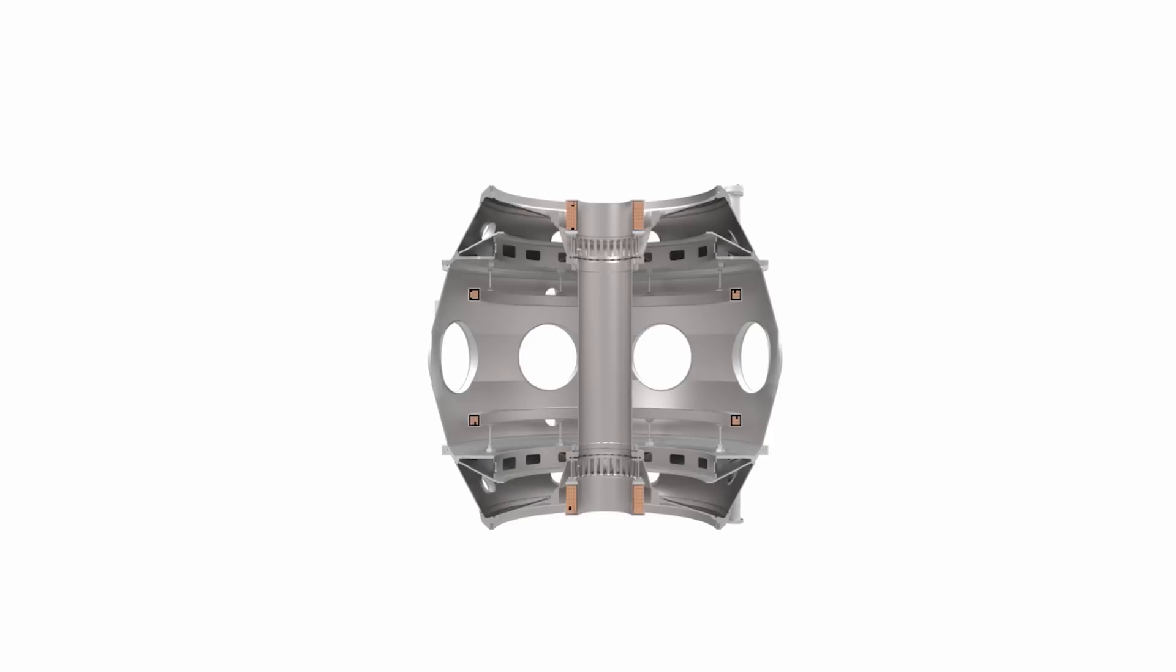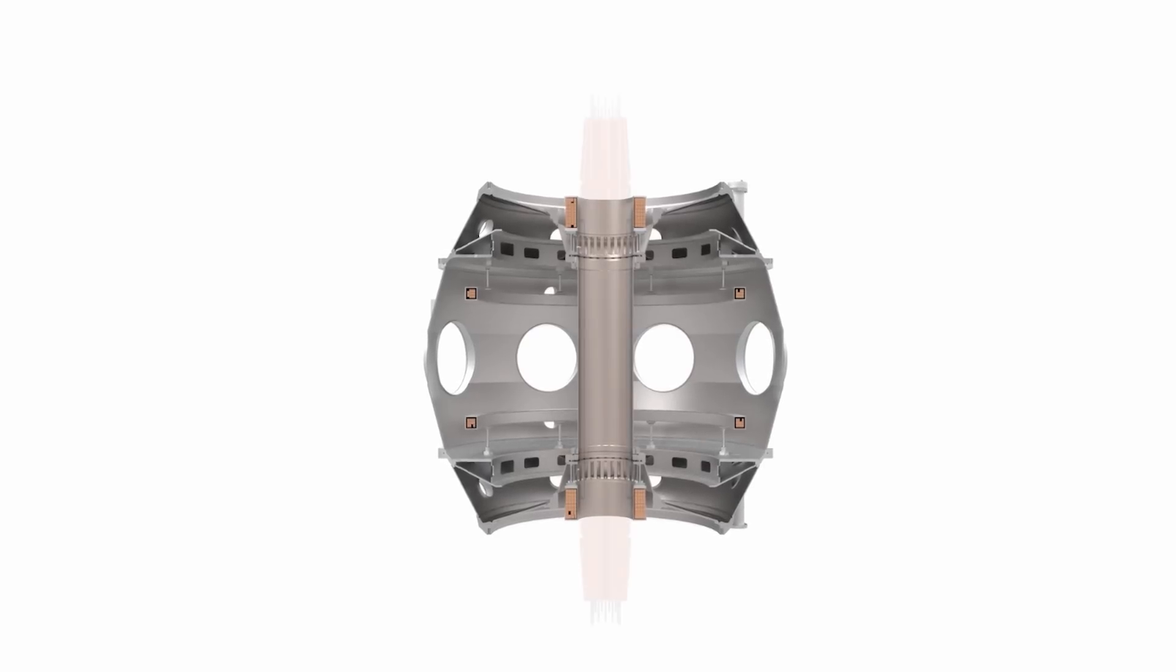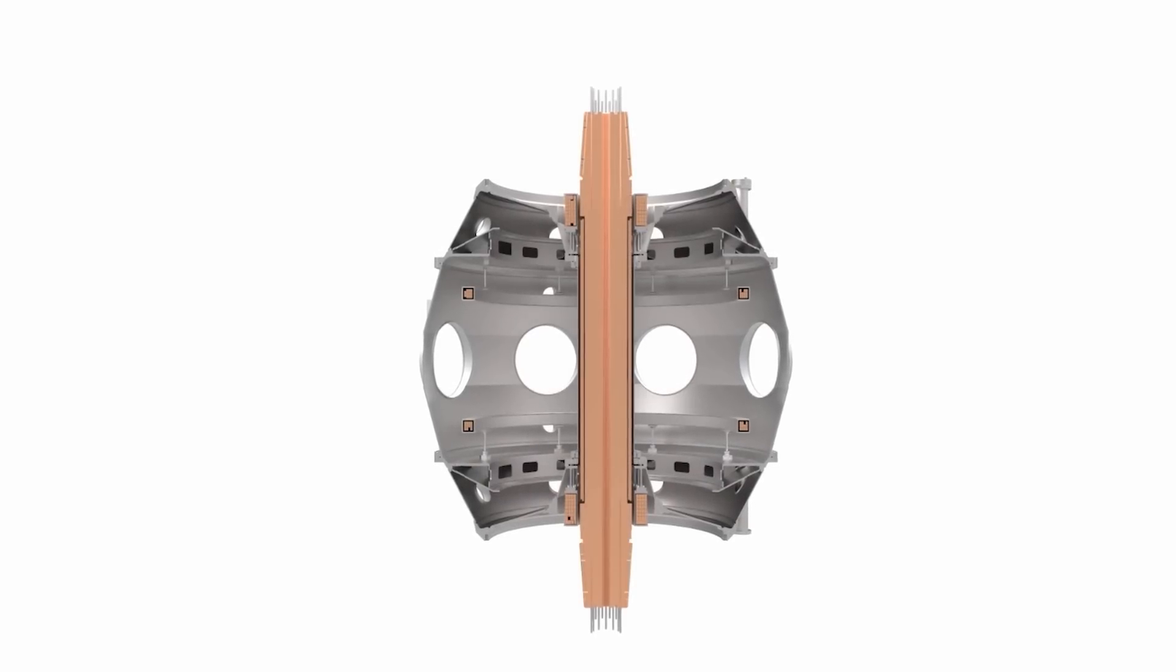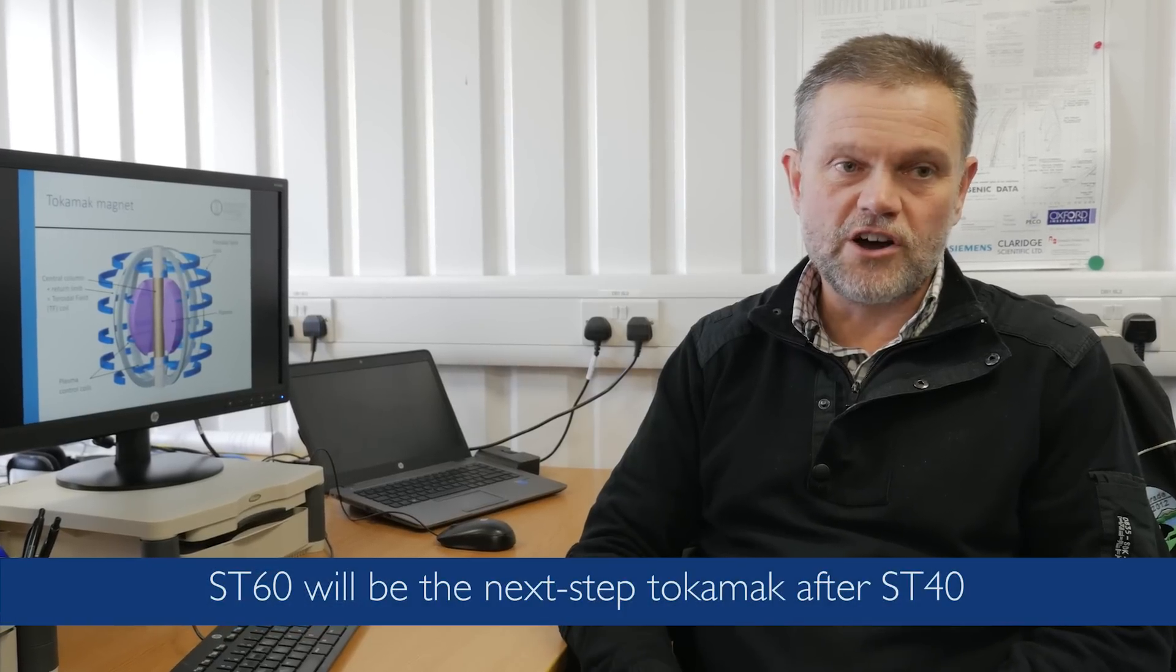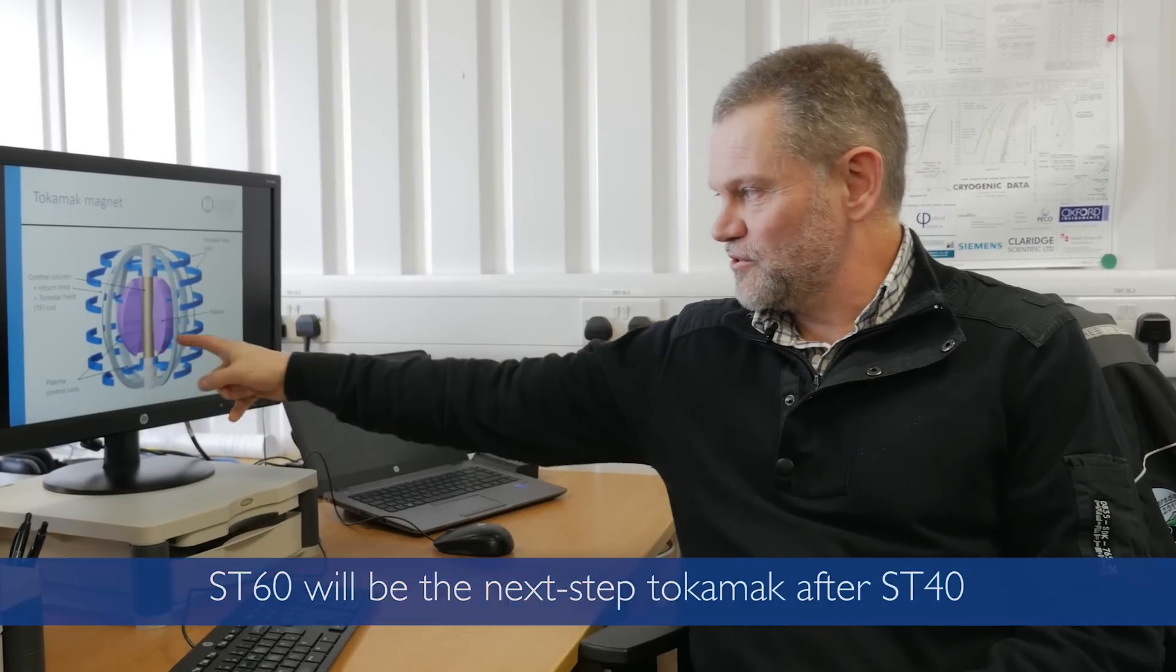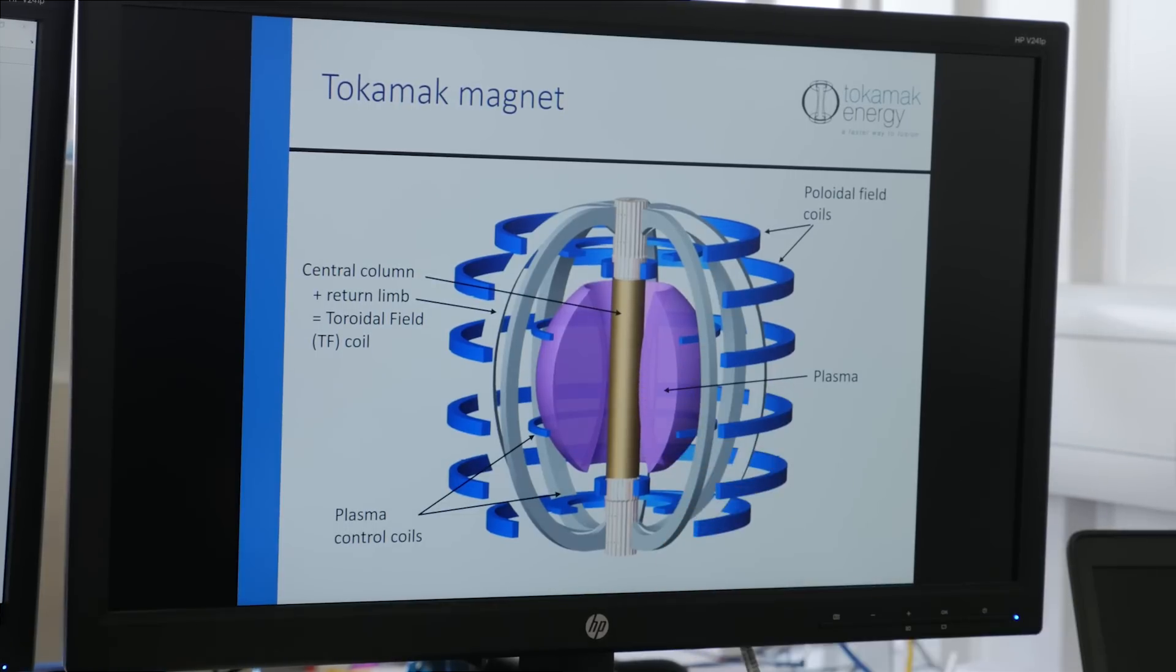The challenge is that the magnetic field has to be much stronger near the superconductors. So on the surface of the central column, the field in the plasma on an ST60 size machine would be about 5 tesla and the field on the central column would be about 16 tesla. That's just about within the range of the conventional superconductors that are used in ITER